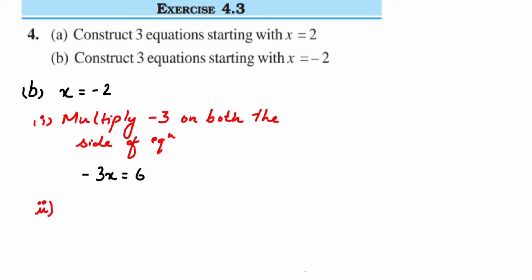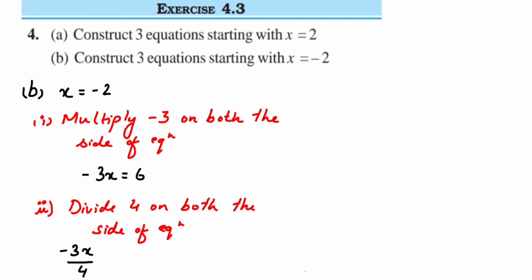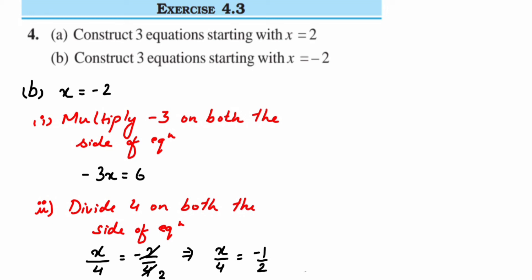For the second equation, I'll divide by 4 on both sides. That gives x/4 = -2/4. We can simplify: cancel 2 and 4 to get -1/2. So x/4 = -1/2 is the second equation.